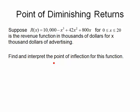I'm going to need to first get two derivatives. So the first derivative is going to be the derivative of 10,000, which will be 0. The derivative of minus x cubed is minus 3x squared. The derivative of 42x squared is 84x, and the derivative of 800x is 800. So R prime is minus 3x squared plus 84x plus 800.